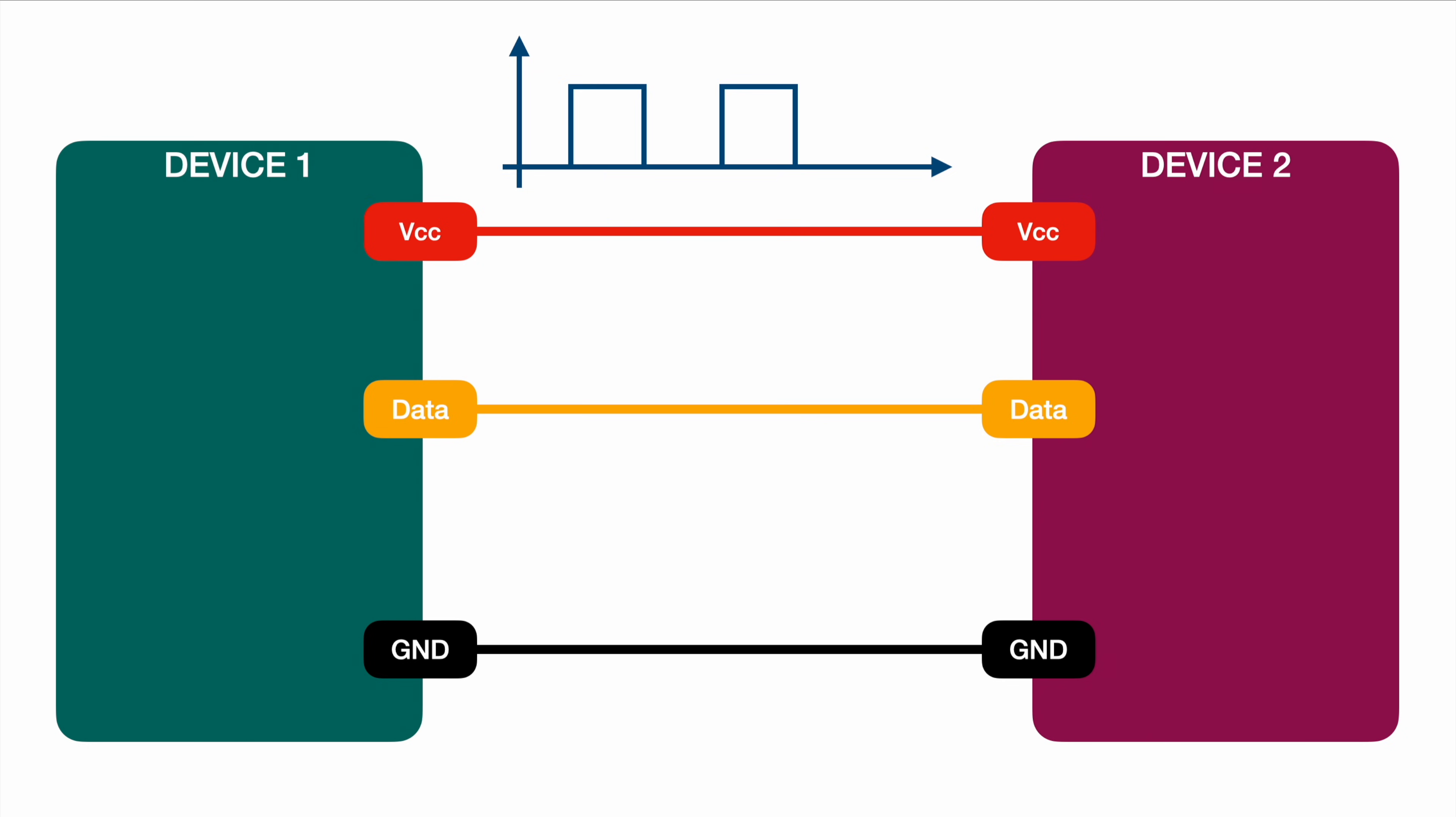In case device one wants to communicate this specific signal to device two, it will do the following. It will use an internal digital switch, I will just illustrate this with a normal switch, and device one will now connect the data line to the power supply line. So device two will now see exactly this level, the high level. The data line is connected to the potential of the power supply line, which is in our case, let's say 3.3 or 5 volts, depending on what device you're on.